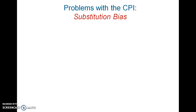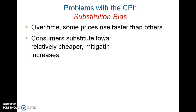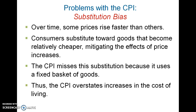The first one is referred to as substitution bias. The main issue here is that for the CPI, the basket is fixed. And in reality, consumers' baskets are not fixed. So they change their baskets when something becomes relatively more expensive or relatively cheaper. So the idea here is that if you have a fixed basket, you miss this idea that consumers lower their cost of living by switching over to relatively cheaper items.